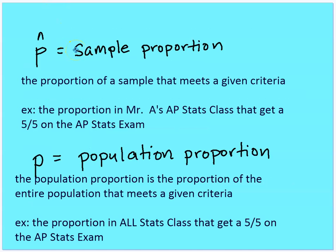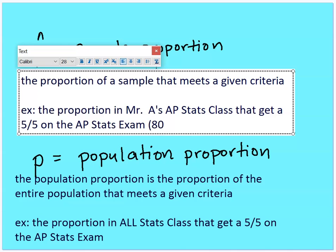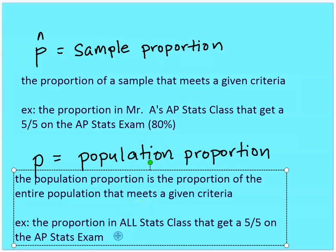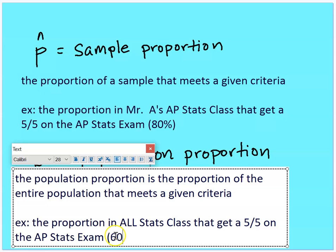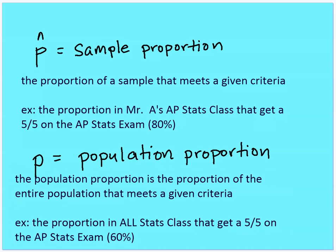Let's go back to our discussion about proportion — this is a refresher from the last chapter. Sample proportion is the proportion of a sample that meets a given criteria. For example, the proportion of Mr. A's stats class that gets five out of five on an AP stats exam, roughly 80%. The population proportion is the proportion of all students that take statistics who get a five out of five — let's say 60%. Sample proportion is written as P-hat, and population proportion is just P.